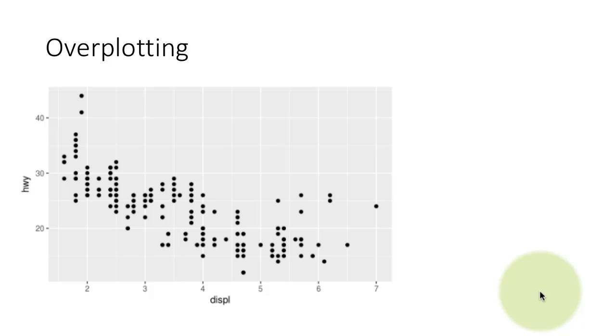Another big issue in general is also a matter of position is called overplotting. Now, if you looked at the number of data items in this particular data set, MPG data set, I think it has about 300 odd rows, not 100% sure at this point, but it has 300 odd rows. But clearly there are not that many points here. So out of 234, only 126 points are actually visible here. The other points are not visible.